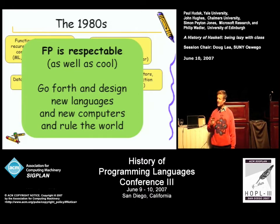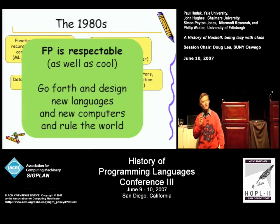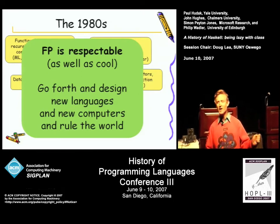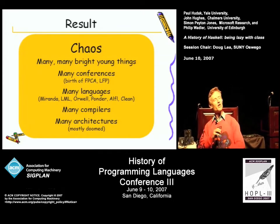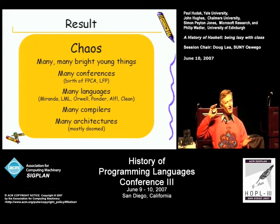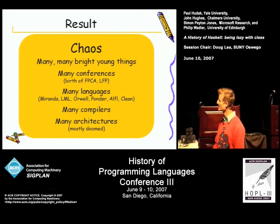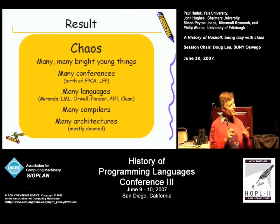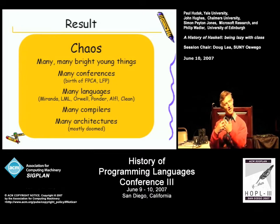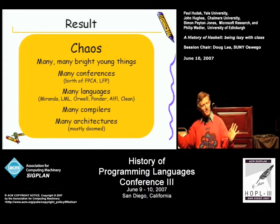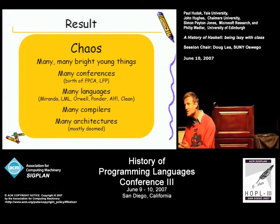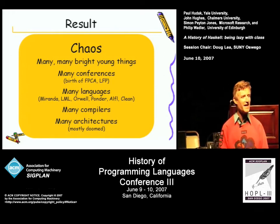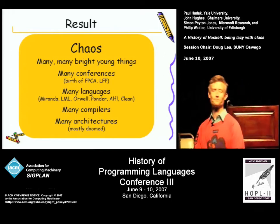So off we went, and it's hard to explain exactly what it felt like. I think it's kind of like being on drugs — and boy, did we inhale. And the result, as you might predict, was complete chaos. The 1980s were essentially occupied by lots of different research groups going off and doing exciting things. Many conferences appeared: the first meeting of the Functional Programming and Computer Architecture conference happened — note the computer architecture bit, it was all tied up together. The Lisp and Functional Programming conference was born. They subsequently merged to form ICFP. Many languages appeared, many compilers appeared, many computer architectures appeared, including ones that executed S and K directly. Burroughs even patented the idea. Mostly doomed.